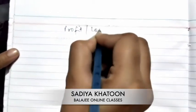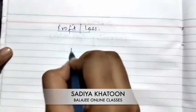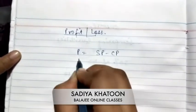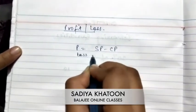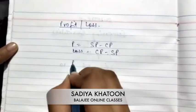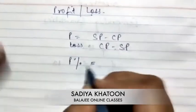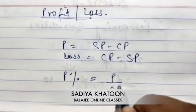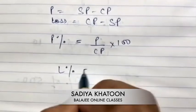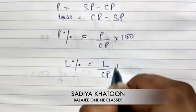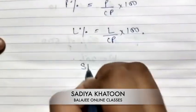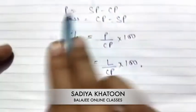Next is profit and loss, which you have already studied in previous classes. Profit equals SP minus CP, and loss equals CP minus SP. Profit percent equals profit upon CP into 100, and loss percent equals loss upon CP into 100.